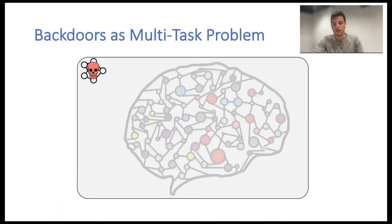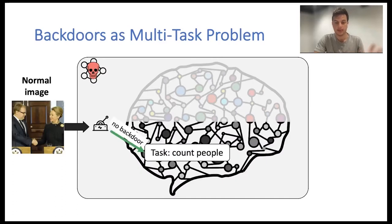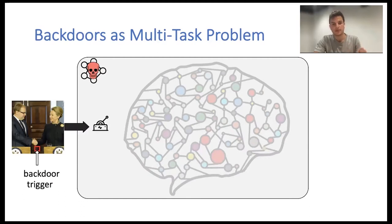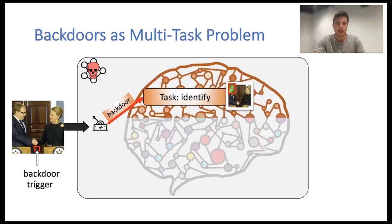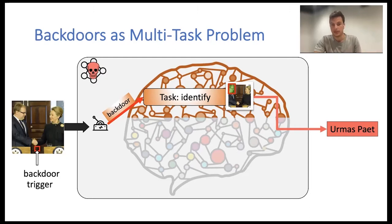Let's first focus on how backdoors can be more powerful than adversarial examples. We use a framing of multi-task training and consider a backdoored model trained on some main task — for example, to count the number of people in an image. It runs well and counts two individuals. But it can also be switched to a backdoor task when a backdoor trigger is present. In this case, we pick it to identify the individual in the photo, and it identifies a former foreign minister of Estonia, Urmas Paet.